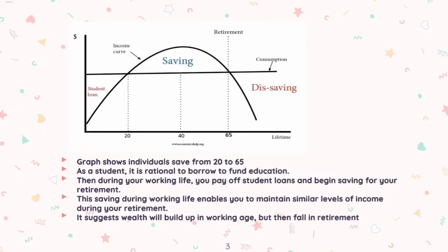A student is rational to borrow to fund education. During your working life, you pay off student loans and begin saving for your retirement. This saving during working life enables you to maintain similar levels of income during your retirement.